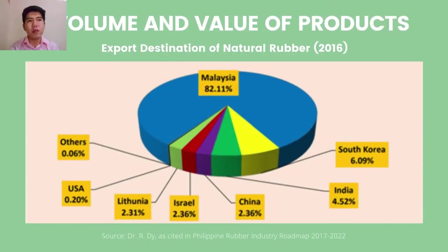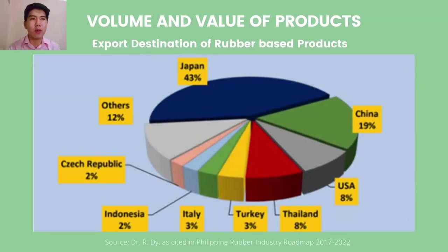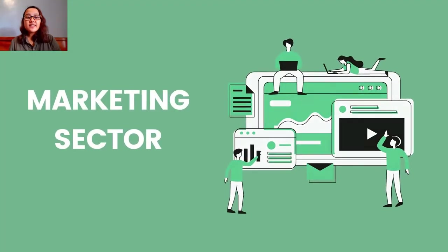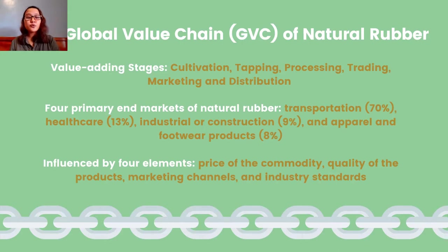Most of the Philippines' natural rubber was exported to Malaysia, amounting to 82.11% of the total natural rubber produced. Japan led the acquisition of rubber-based products with 43%. The global value chain of natural rubber encompasses a short chain of major processing activities, divided into five value-adding stages: cultivation, tapping, processing, trading, and marketing and distribution.